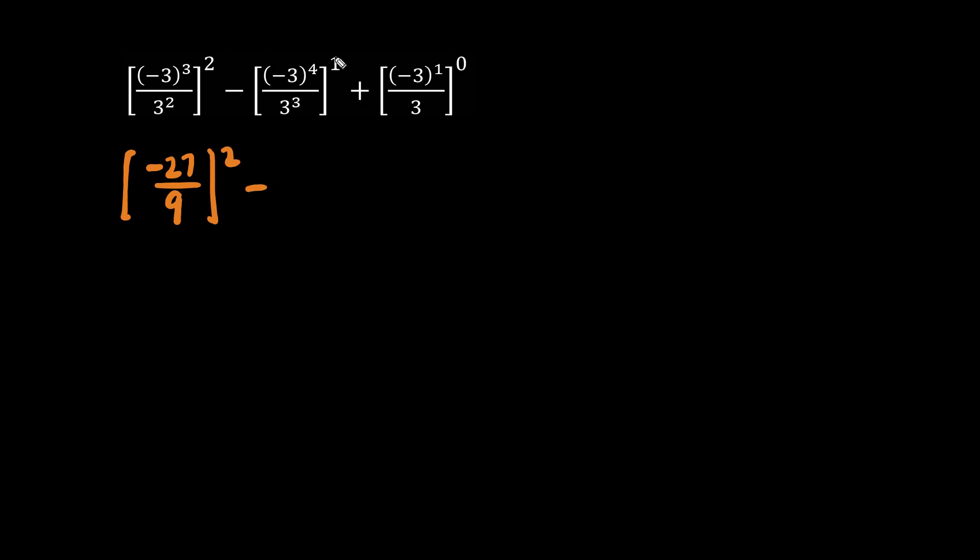For the second term, we have something to the 1, which is just itself. So let's copy down the square bracket. Notice how this is a negative 3 to an even number, so this is essentially 3 to the 4. 3 to the 4 divided by 3 to the 3, subtracting the exponents, is 3 to the 1, or just 3.